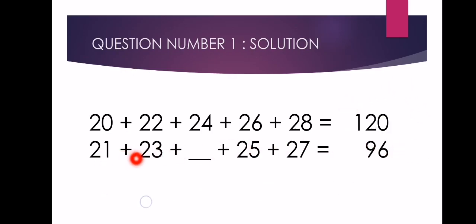The next thing to do is to add 21, 23, 25, and 27. So we'll have 96. In order for us to determine the missing number, these two equations are equal to each other. That means we need to find what number is lacking from 96 to become 120.